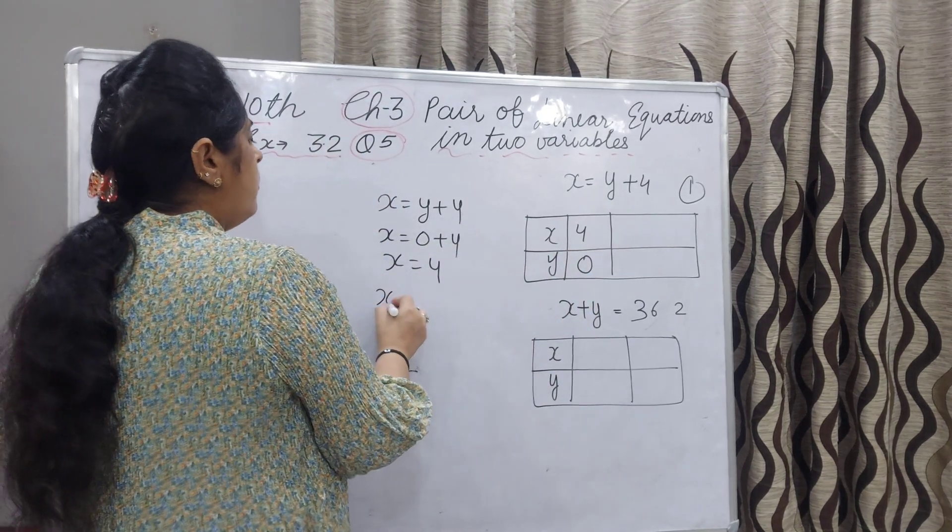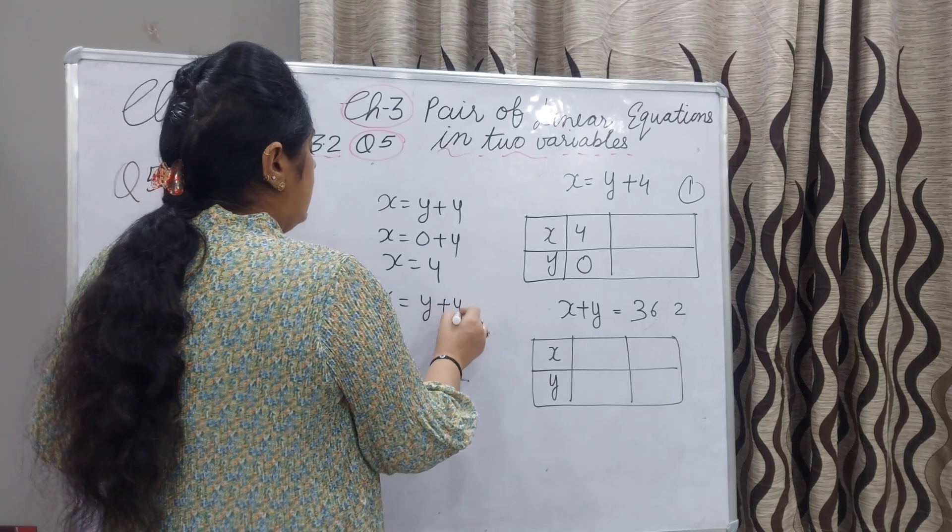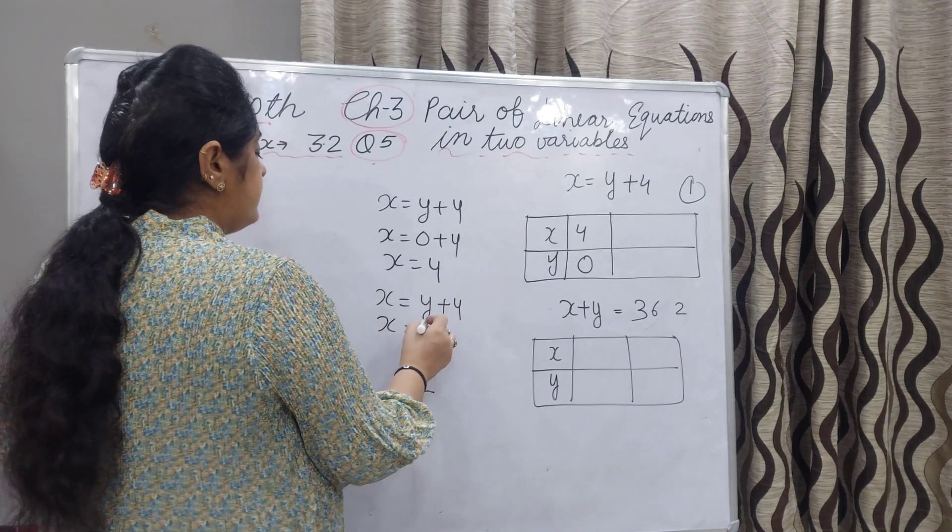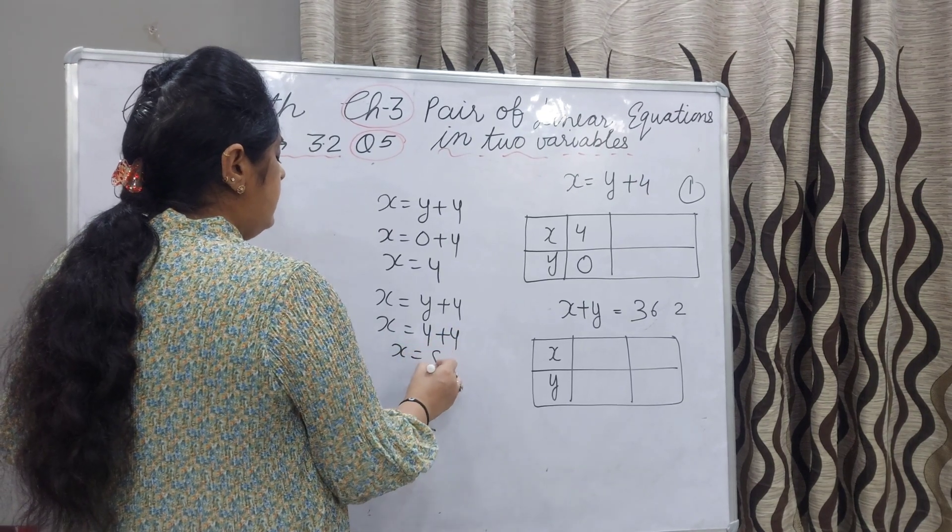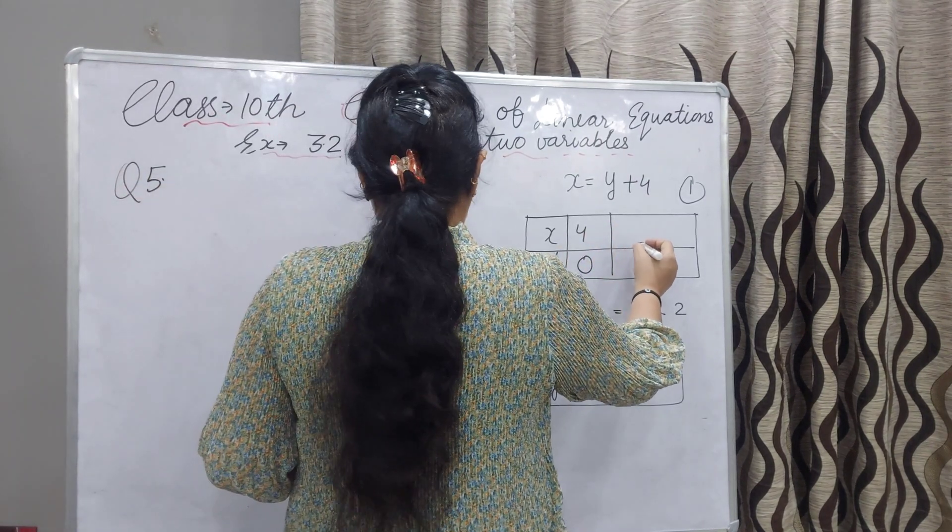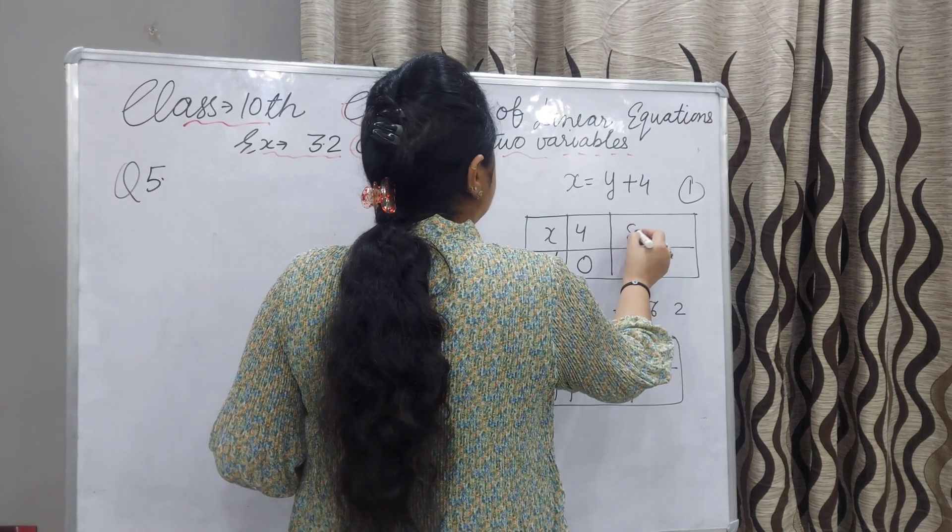Take now y as 4 - anything you can take, I am taking 4. If y value is 4, x value is coming 8. y is 4 and x is coming 8.